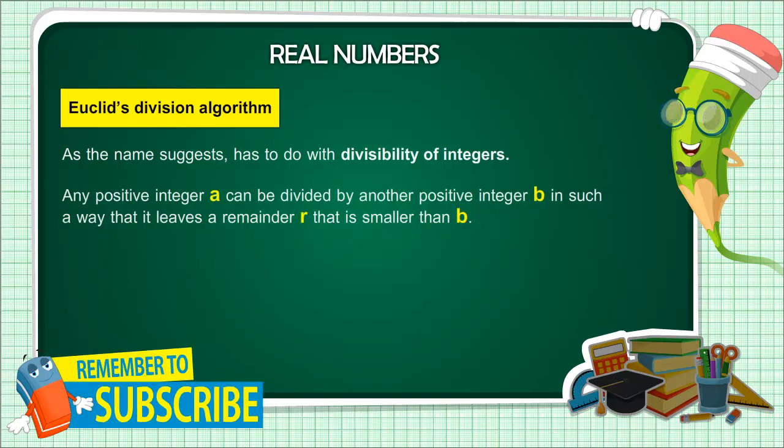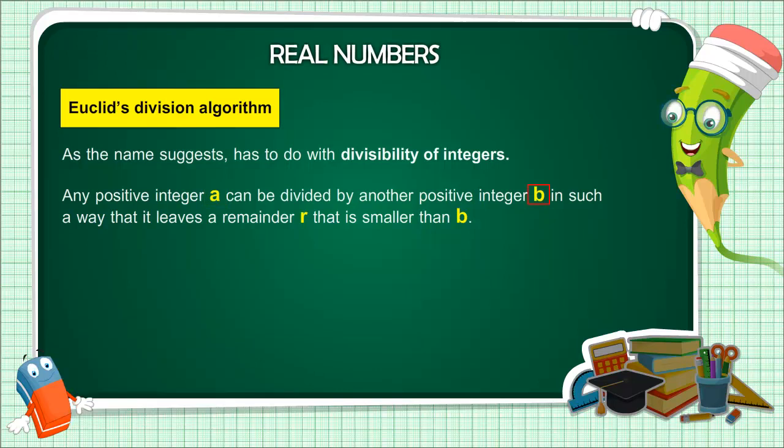Any positive integer A can be divided by another positive integer B in such a way that it leaves a remainder R that is smaller than B.